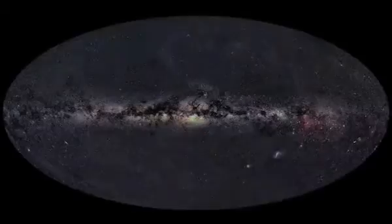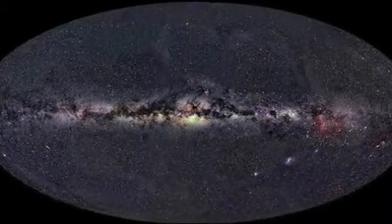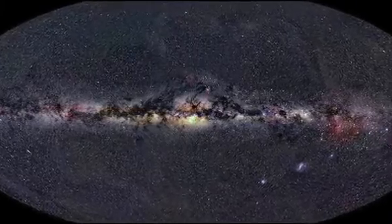Looking at different types of light coming from objects in space reveals a hidden and violent universe. This is a typical visible view of the entire sky.